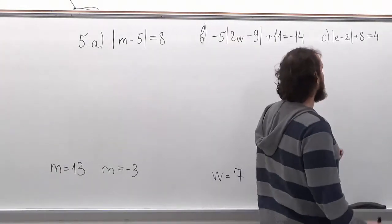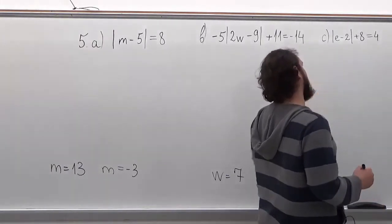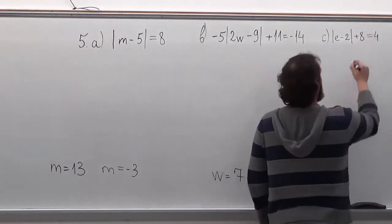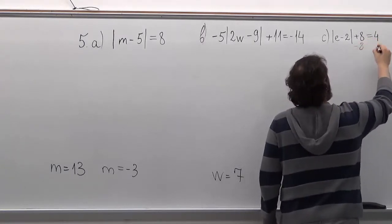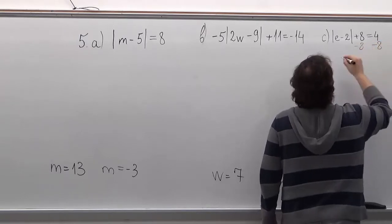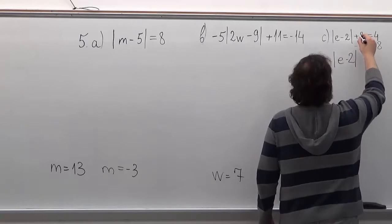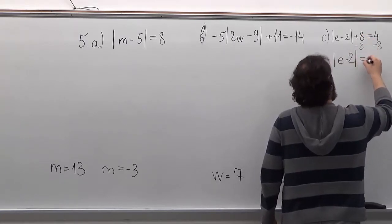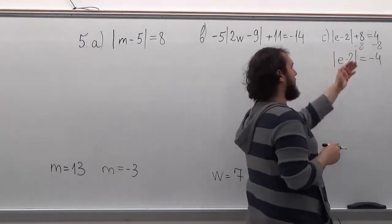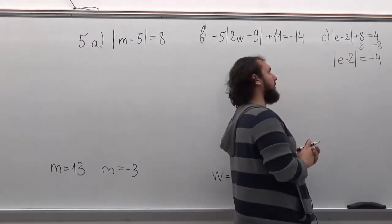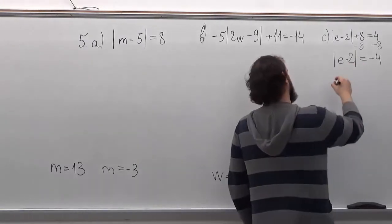In this problem, once again, we want only the absolute value to be on the left side of the equation. So what we do is we subtract 8 from both sides. 8 minus 8 is 0, and 4 minus 8 is minus 4, and what we're left with is minus 4. We know that absolute value cannot have a negative value, so this problem will not have a solution.